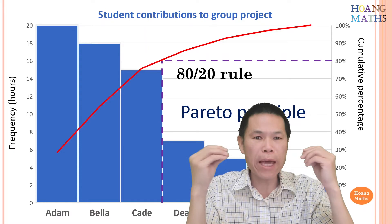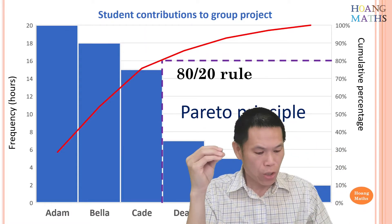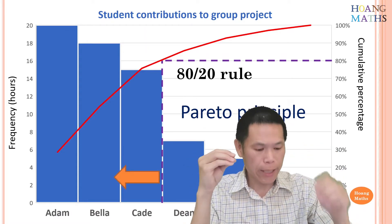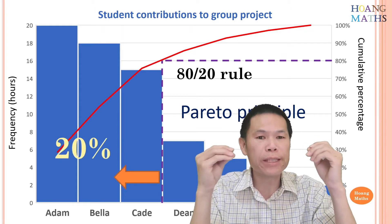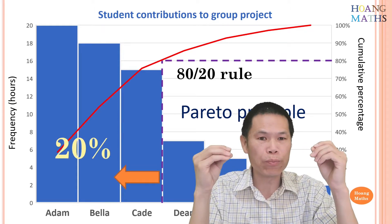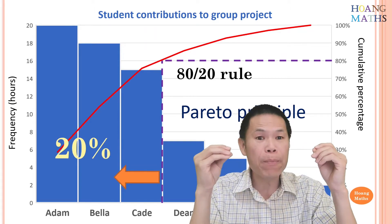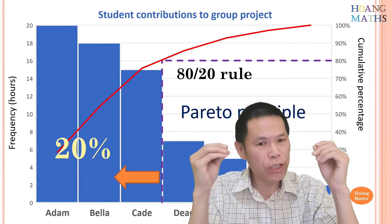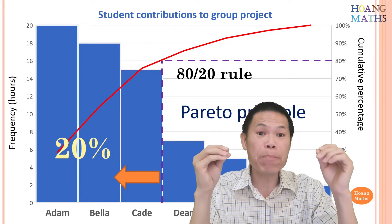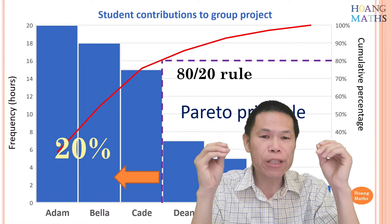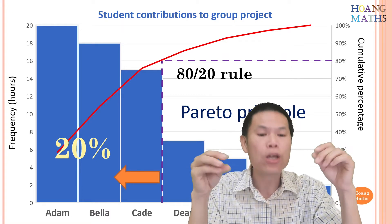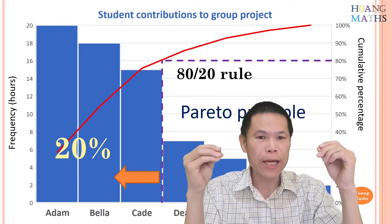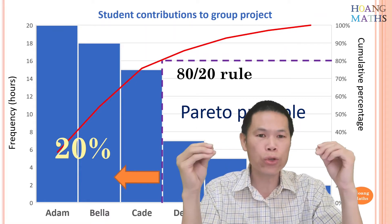Let's focus back on this Pareto chart. Behind the purple line represents 20% of the group. In this case, Adam, Bella, and Kate represent 20% of the group and they make 80% contribution to the group project. Now I'll teach you how to draw this Pareto chart.